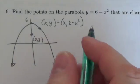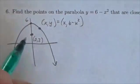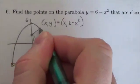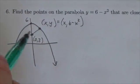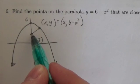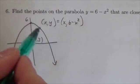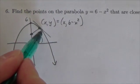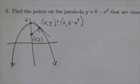y is equivalent to six minus x squared and we're going to draw a line from (0, 3) out to that point. Now the distance from that point to the point (0, 3) will be minimized when the tangent line is perpendicular.